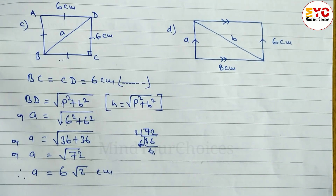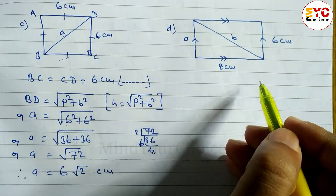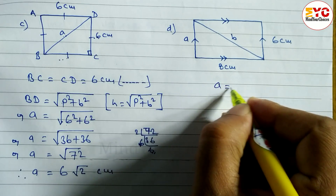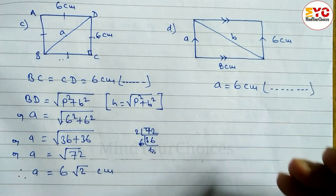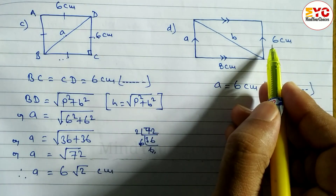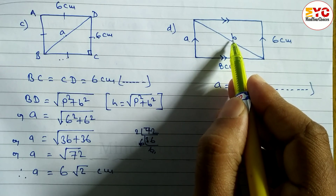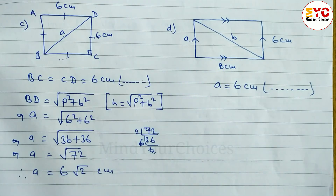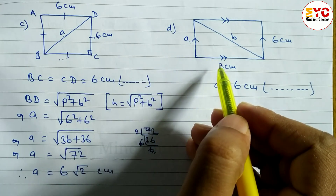Now look at question d. This is a parallelogram, and opposite sides are equal. So we can write a is equal to 6 centimeters directly, with the reason: opposite sides of a parallelogram are equal. Now to find the value of b, there is a 90-degree angle shown in the diagram.